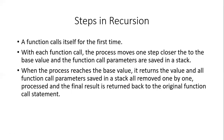With each function call, the process moves one step closer to the base value, and the function call parameters are saved in the stack. Because recursion is iterative in nature, there is a base value for how many times you can call the same function. With every function call you move one step closer to that base value — for example, if making 5 recursive calls, you move from 1 to 2, then 3, 4, and 5. Once you reach 5, the base value, you start to return, and every recursive call is saved into the stack.